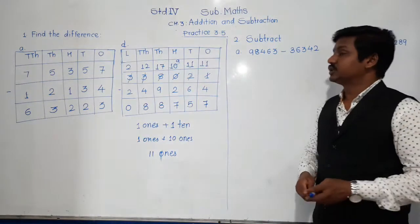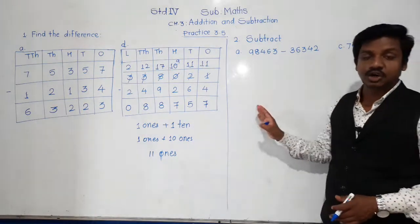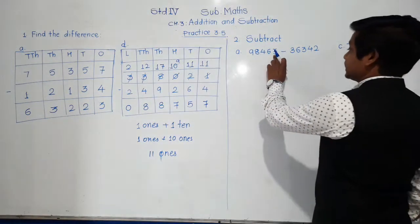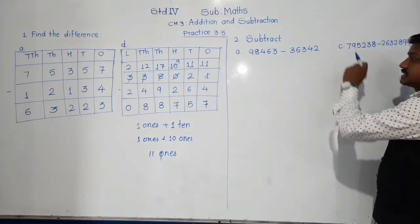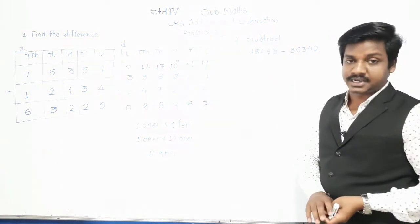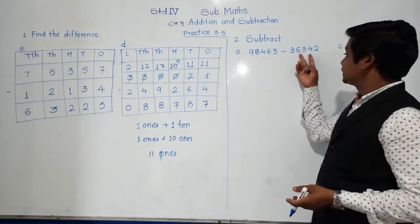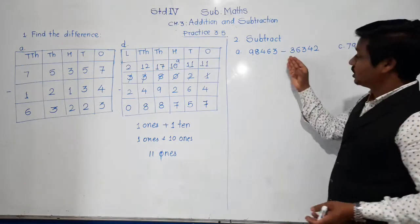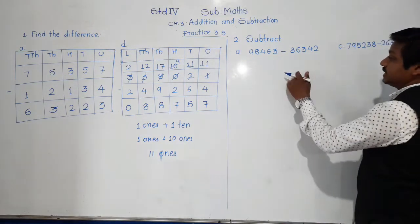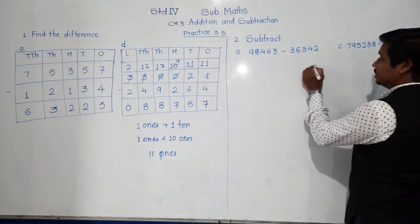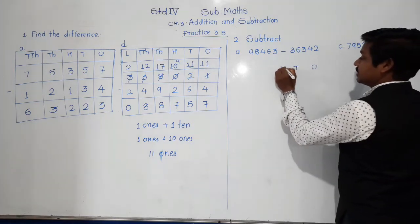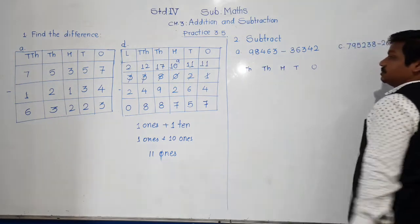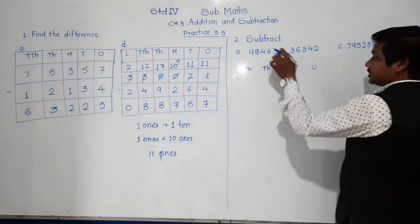Let's move to the second question: subtract. Here the numbers are not given in column form, just two numbers are given: 98,463 minus 36,342. The greater number is written on top and the smaller number below. First write the names of places — since it is a five-digit number: ones, tens, hundred, thousand, and ten-thousand. Make the column in your notebook.